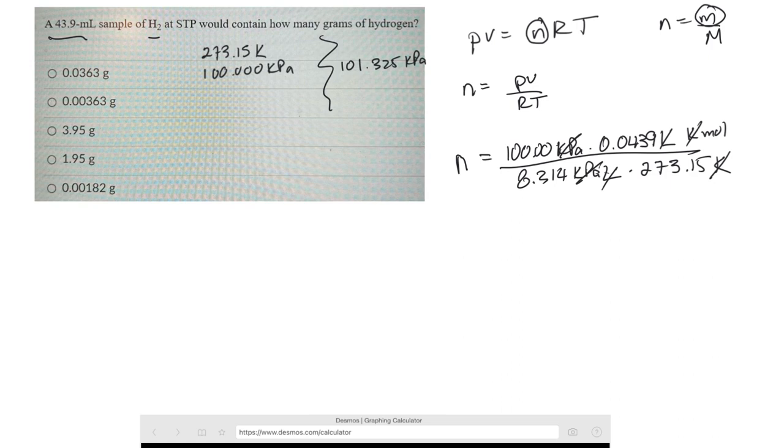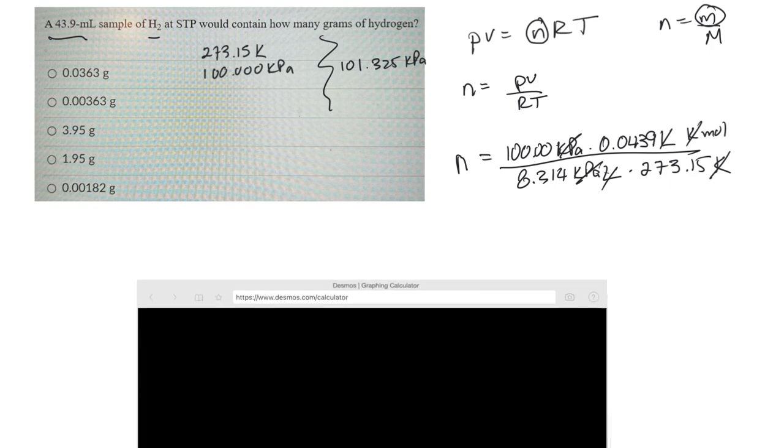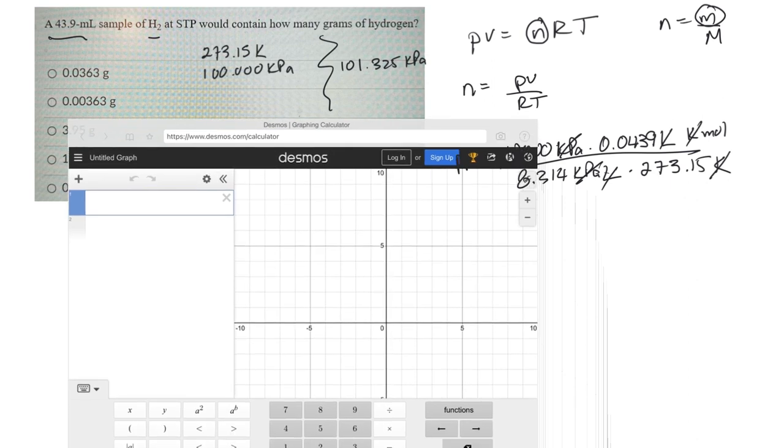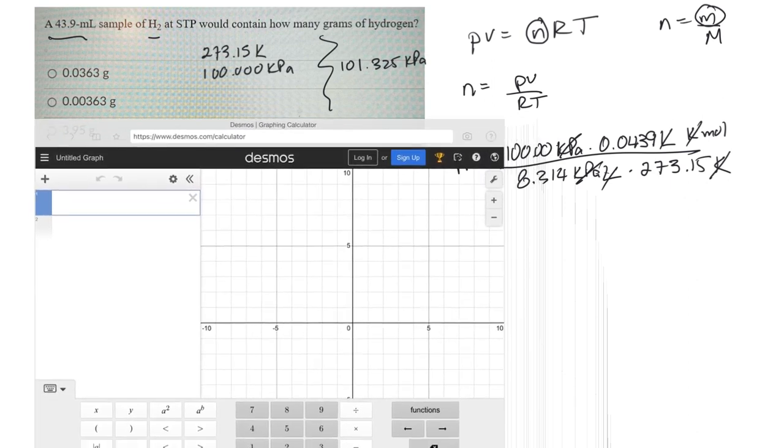And now, I just have to multiply and divide that. So let's do it here. So 100 times 0.0439, divided by 8.314 times 273.15. Okay, so that gives me the number of moles,